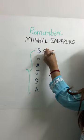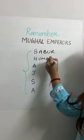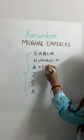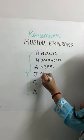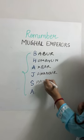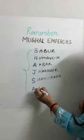Now let's decode it. B from Babar, then Humayun, then we have Akbar, then Jahangir, then Shah Jahan and then Aurangzeb. It was that simple, isn't it?